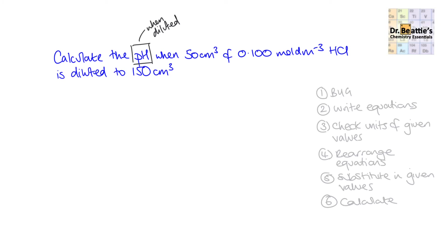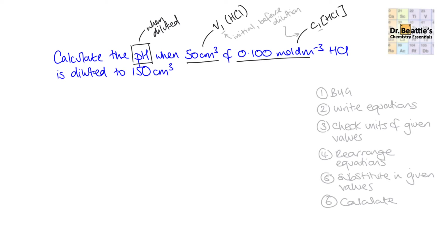We box the target, then underline any given values and annotate what they are. Here we have V1, where 1 is the initial before dilution, and then the concentration given is also the initial before dilution. We're then told that the hydrochloric acid is diluted to 150 cm³. This allows us to work out what we need and what we're given, ticking off the first step.